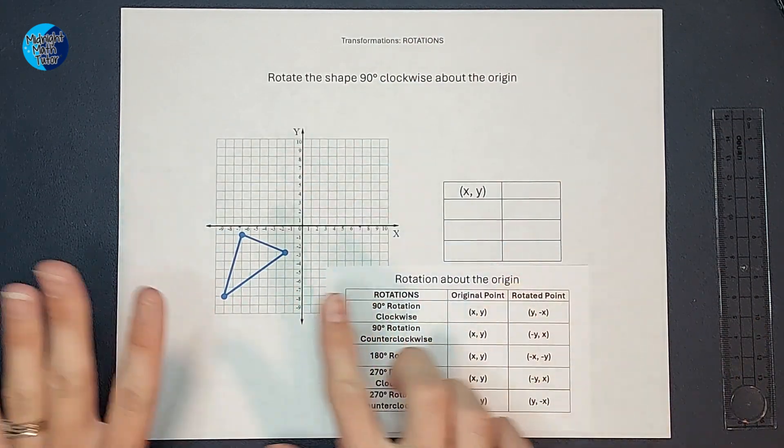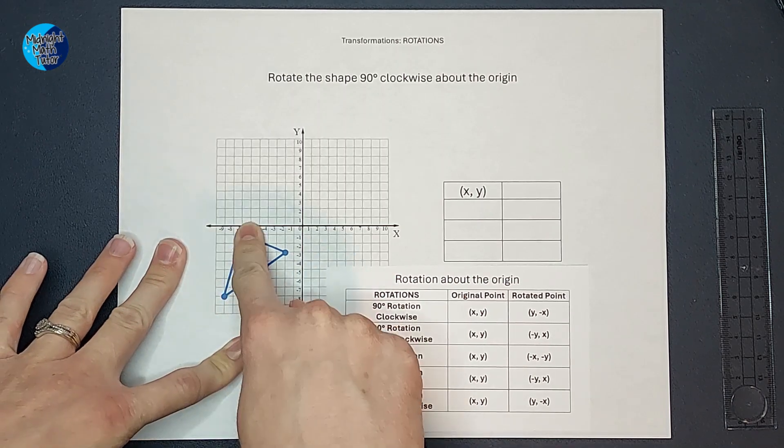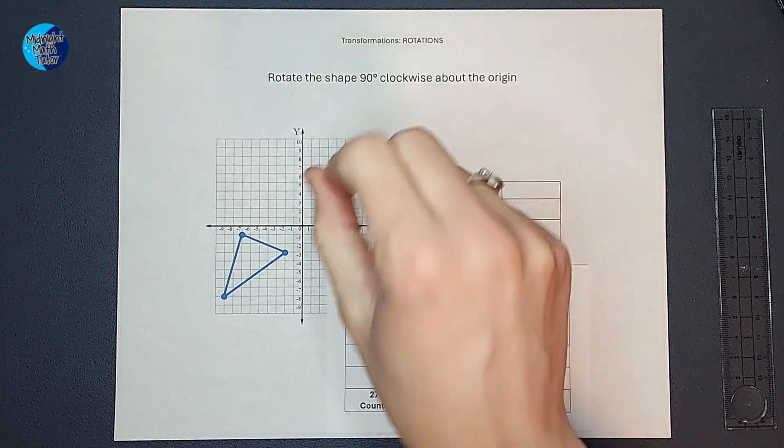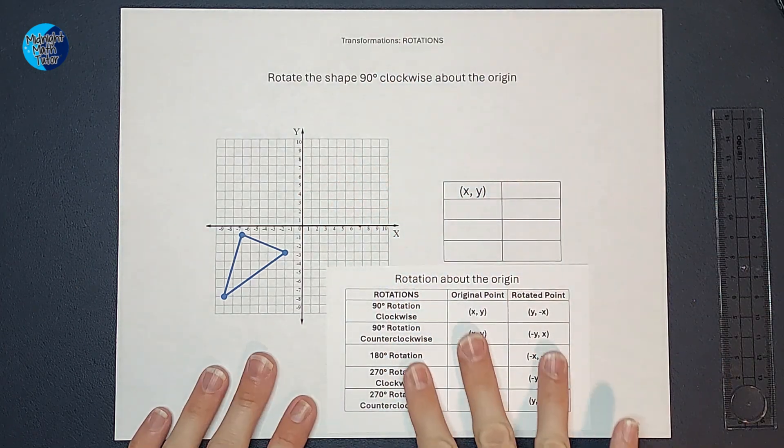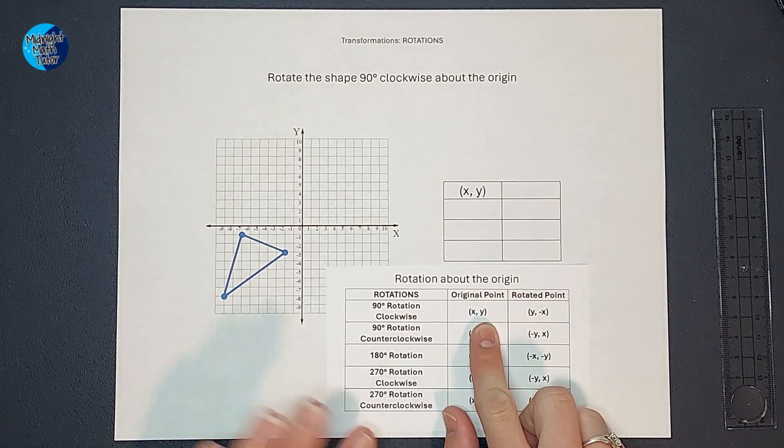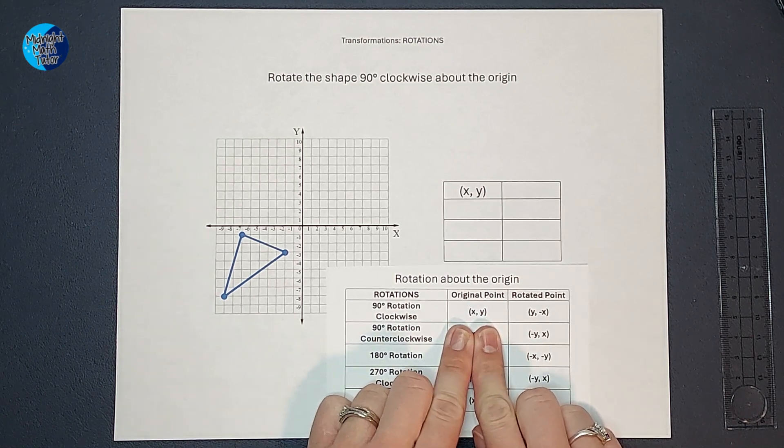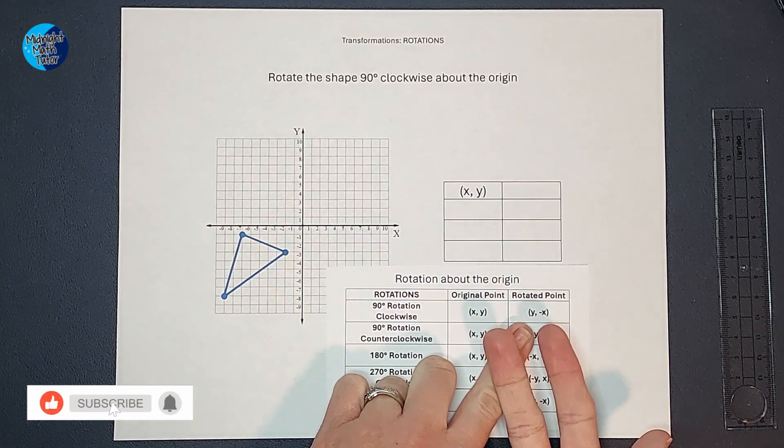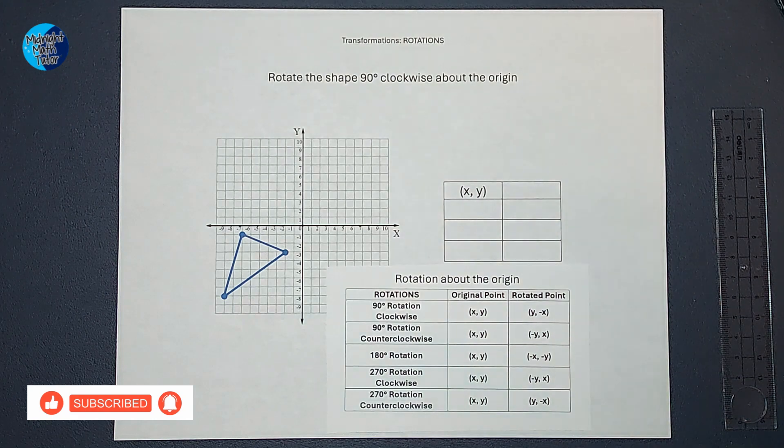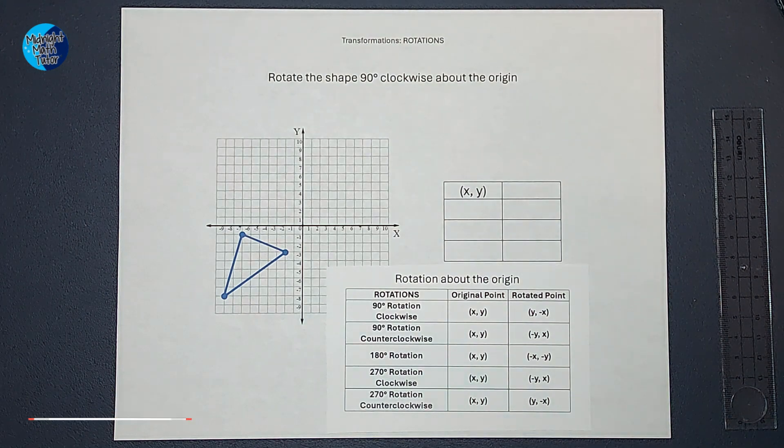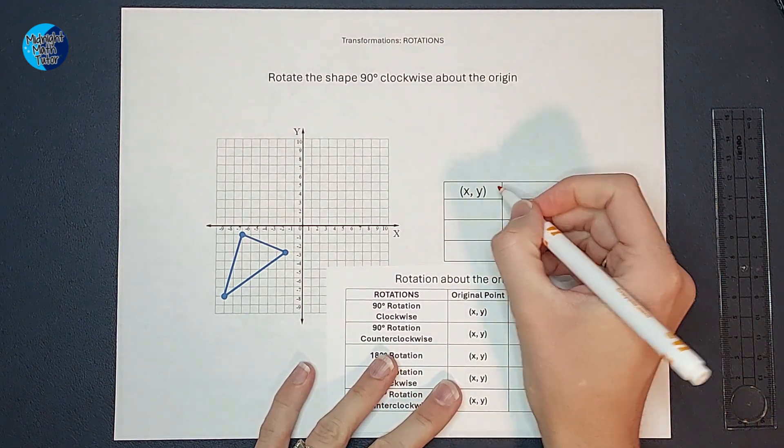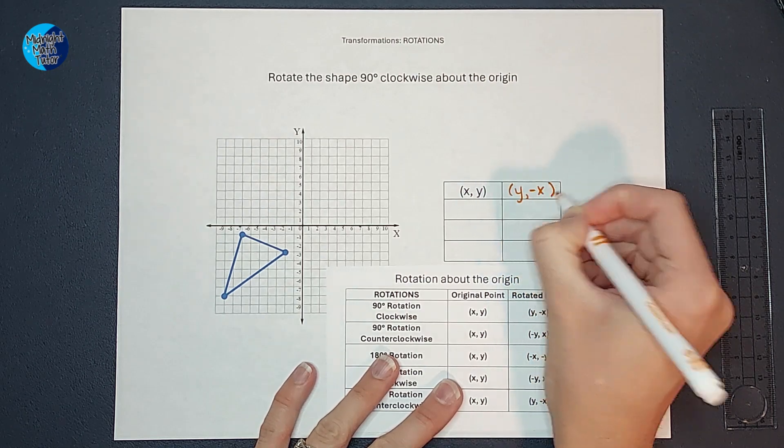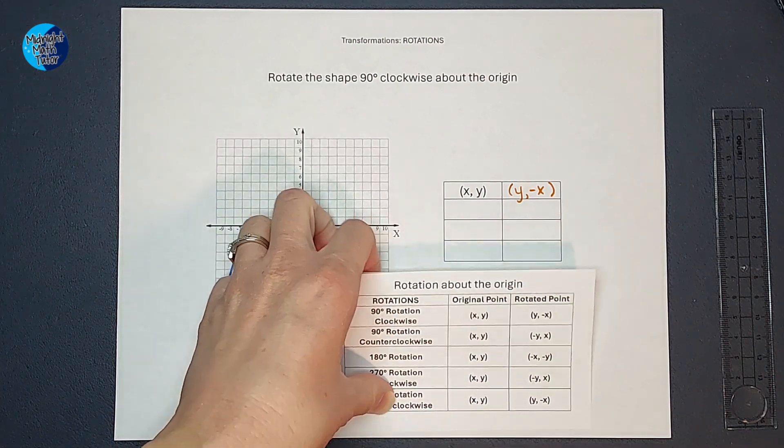So all I need to do is figure out my original coordinates. Then we are rotating the shape 90 degrees clockwise. So when I rotate 90 degrees clockwise, whatever my original point was, my x, y, I am going to switch those numbers and change x's sign. Does that sound crazy? Well, that's what we're going to do. So I'm going to put that here as a reminder to myself. We are switching x and y and changing x's sign.